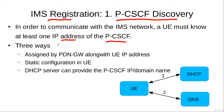This IP address of the proxy call session control function may be assigned to a user equipment in one of three ways. In the first method, when a user equipment registers itself with the 4G network, the PDN gateway assigns the IP address to the user equipment, and along with that IP address, the PDN gateway can also assign the IP address of the proxy call session control function to the user equipment.